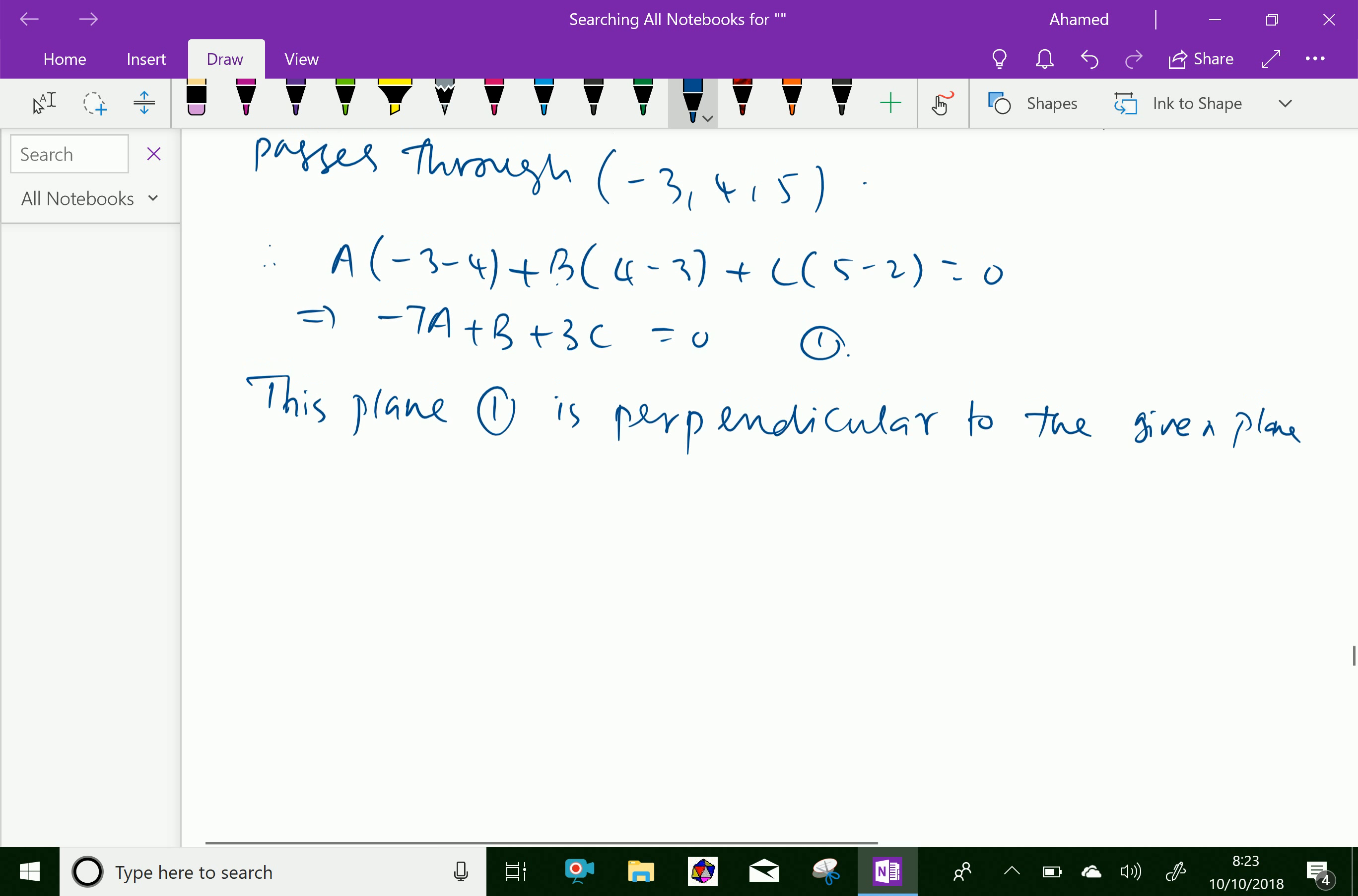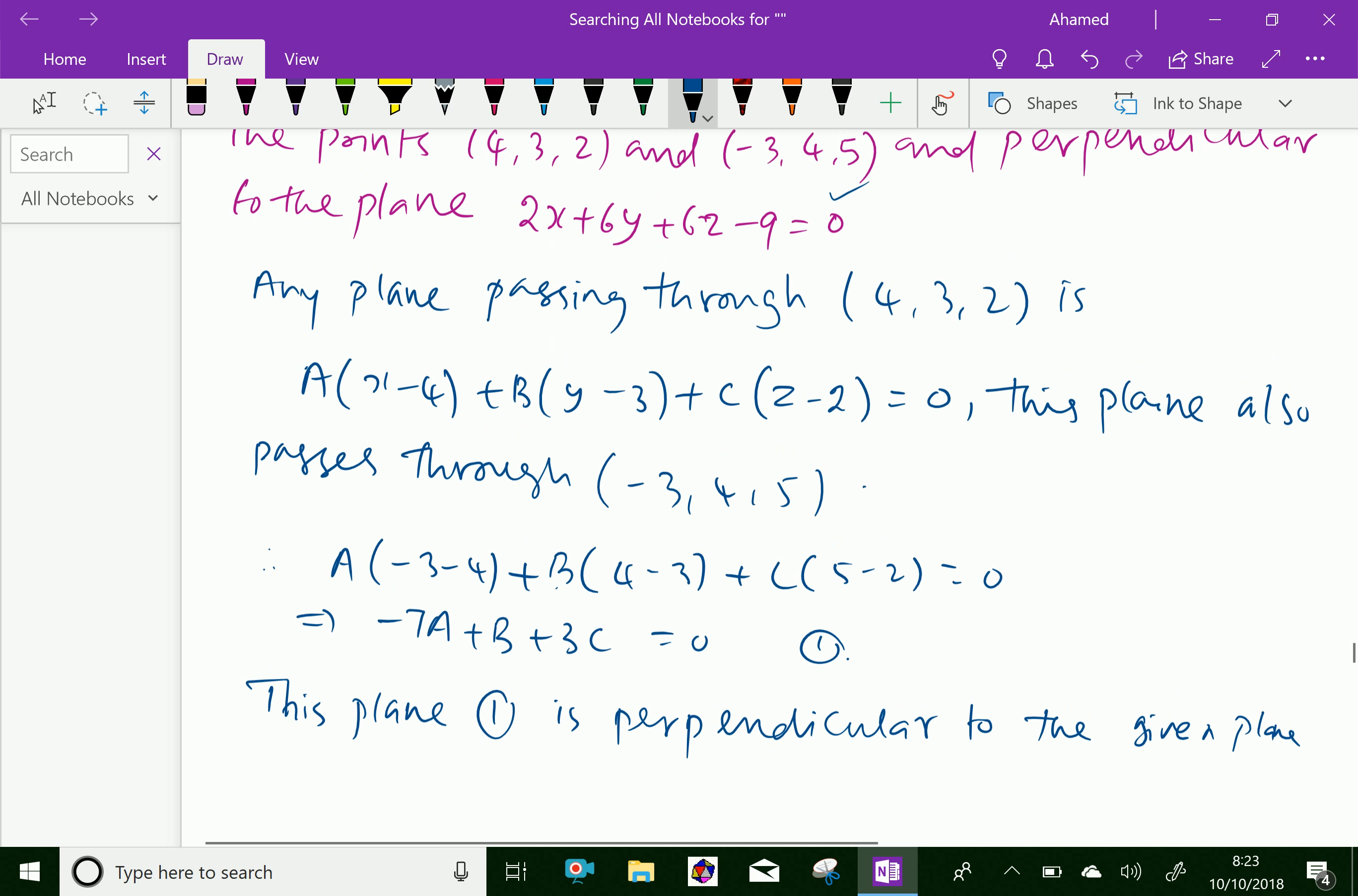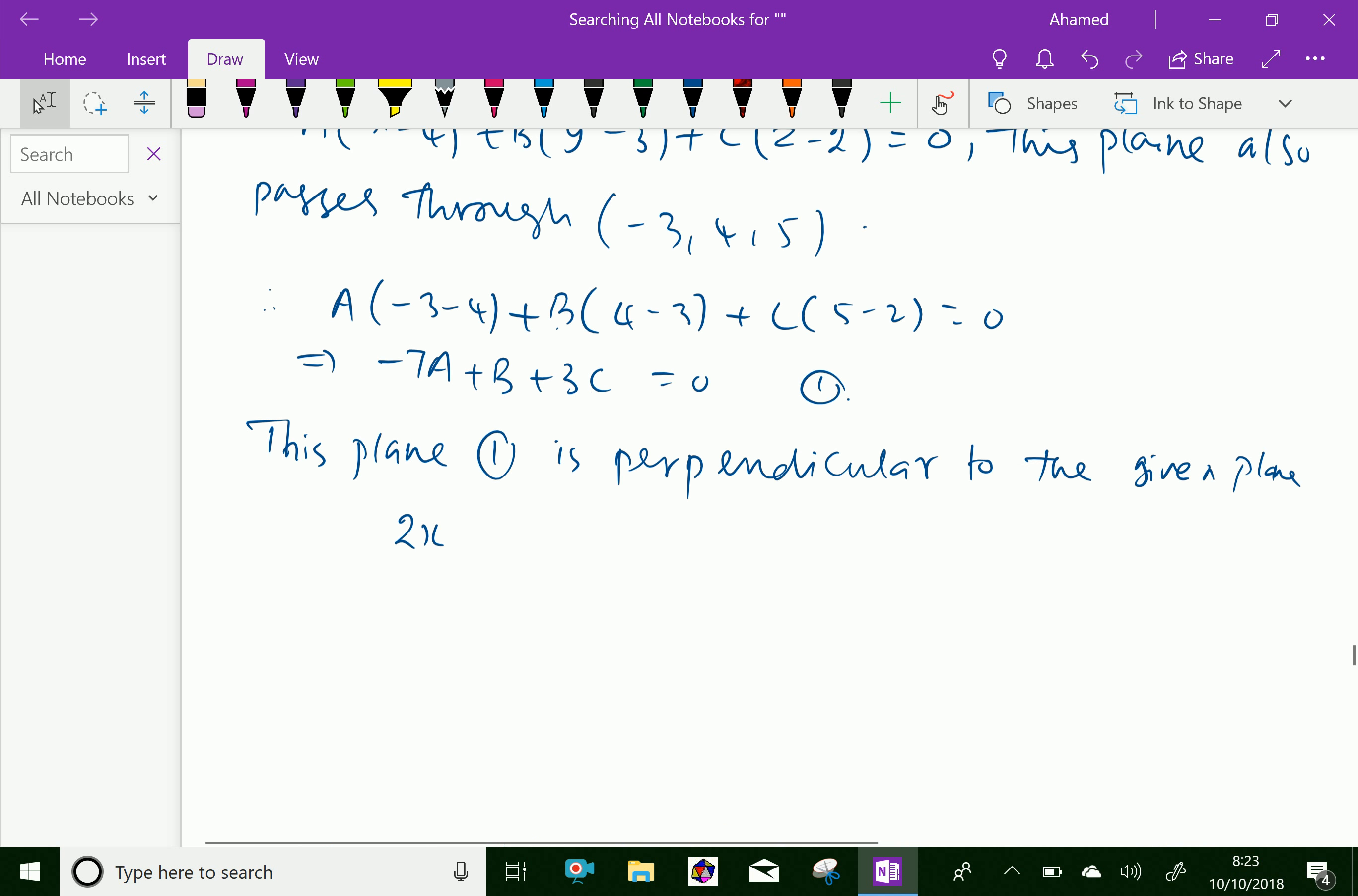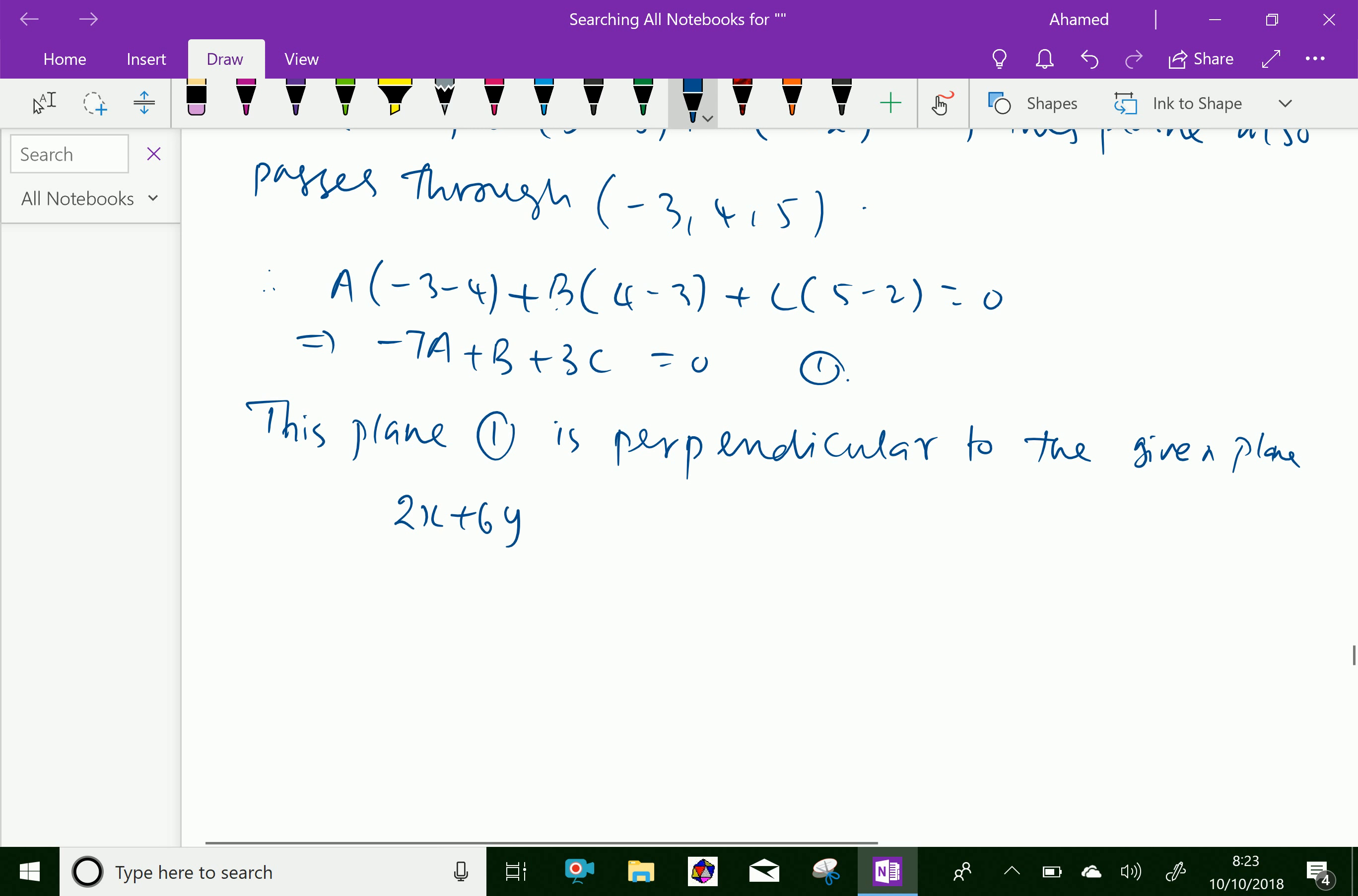The given plane is 2x + 6y + 6z - 9 = 0.